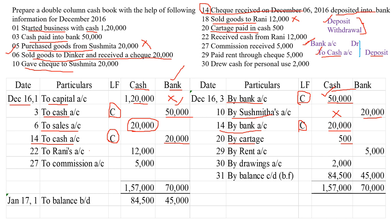Then received cash from Rani. We are receiving cash — when you are receiving cash, it should be debited. So in the debit side, to Rani's account, since we are receiving cash, I am recording it in the cash column — 12,000 rupees. Then commission received — we are receiving commission, cash comes into the business. So we are debiting it to commission account and writing the amount in the cash column.